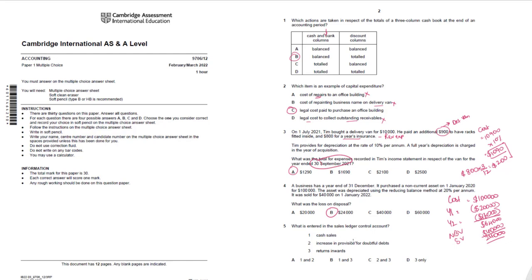What is entered in the sales ledger control account? Cash sales are not entered because they are not transactions with debtors and are not recorded in the sales ledger. An increase in provision for doubtful debts is also not recorded in the debtors account or sales ledger. Return inwards — yes, that is recorded in the sales ledger. So the correct option is D.